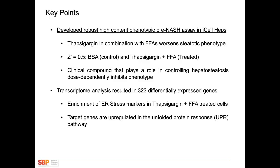Key points: we've established a robust high-content phenotypic pre-NASH platform. Thapsigargan, the ER stressor, in combination with free fatty acids worsens the steatotic phenotype toward a pre-NASH phenotype. We have very good screening statistics with a Z-prime of 0.5 between control and treated wells. The clinical compound INT747 shows a nice dose-dependent inhibition of our phenotype and plays a role in controlling hepatosteatosis. On the transcriptome analysis side, there were 323 differentially expressed genes, many of which were ER stress markers in treated cells, specifically targeting the unfolded protein response pathway.